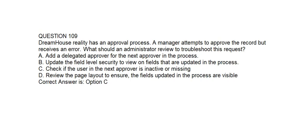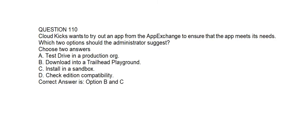Question number one hundred and nine. DreamHouse Realty has an approval process. A manager attempts to approve the record but receives an error. What should an administrator review to troubleshoot this request? Option A: Add a delegated approver for the next approver in the process. Option B: Update the field level security to view on fields that are updated in the process. Option C: Check if the user in the next approver field is inactive or missing. Option D: Review the page layout to ensure the fields updated in the process are visible. Correct answer is Option C.